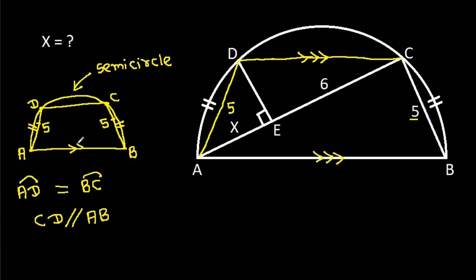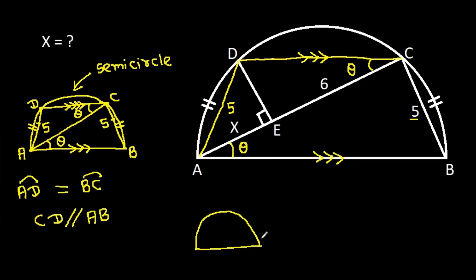Since AB and CD are parallel, these two angles will be equal. If this angle is theta, then this angle will also be theta. And in a semicircle, any diameter subtends an angle of 90 degrees on the circle, so angle ACB will be 90 degrees.